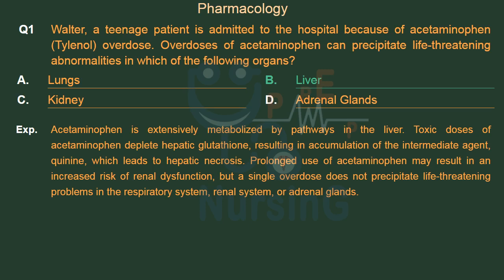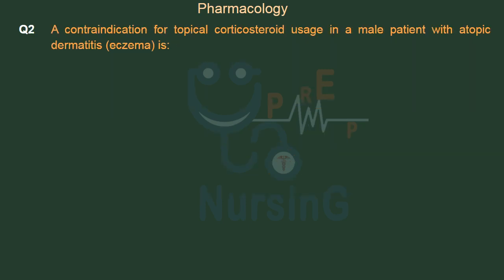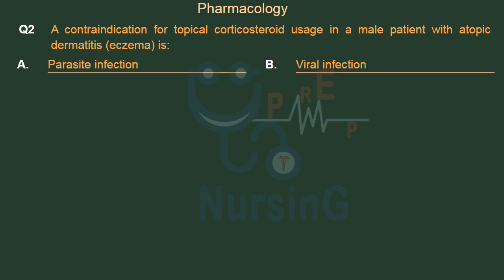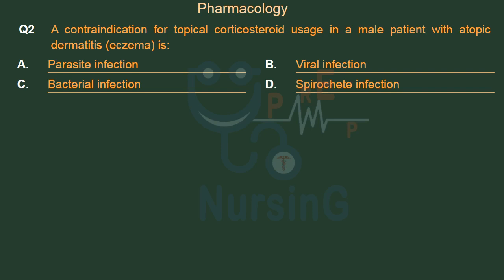Or adrenal glands. A contraindication for topical corticosteroid usage in a male patient with atopic dermatitis (eczema) is: Option A: Parasite infection. Option B: Viral infection. Option C: Bacterial infection. Option D: Spirochete infection. The right answer is Option B: Viral infection.